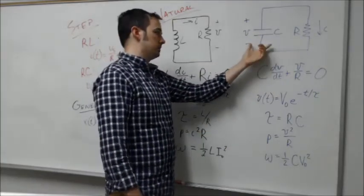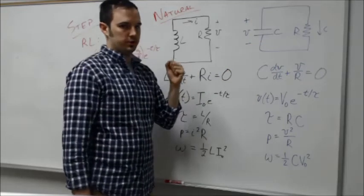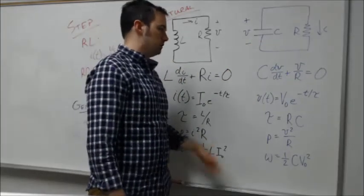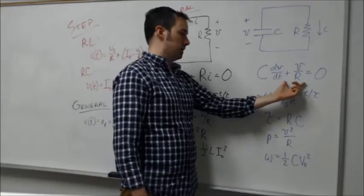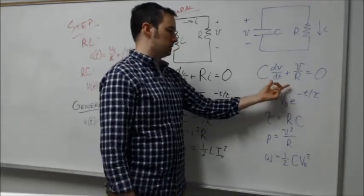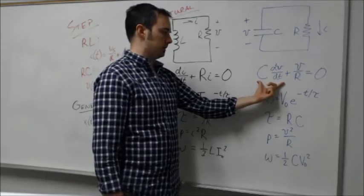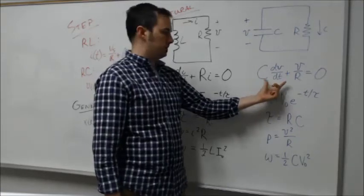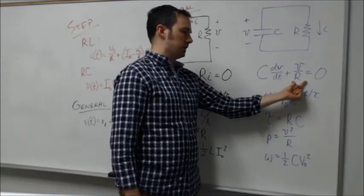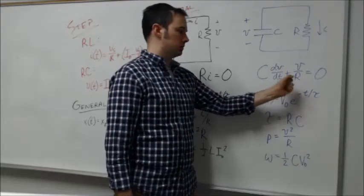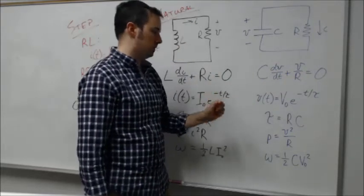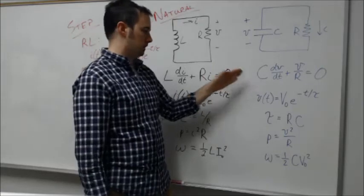Similarly for the RC circuit, if you had some built-up charge on your capacitor initially, that's where your energy is coming from. You can evaluate similarly, although this is more of a KCL type of expression where we're looking at the current that's coming through the capacitor and then the current through the resistor through Ohm's law. Both those have to sum to zero.